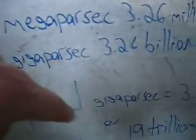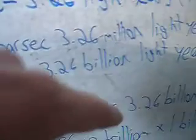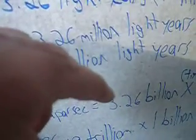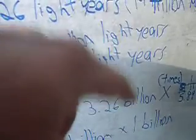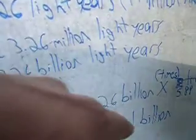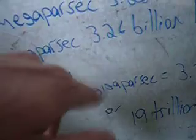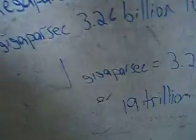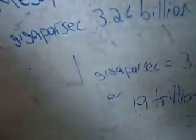So to figure this out: one gigaparsec is 3.26 billion light years times 5.88 trillion miles. Or you can go 19 trillion miles — that's one parsec — times one billion, and essentially what you would get is one gigaparsec.